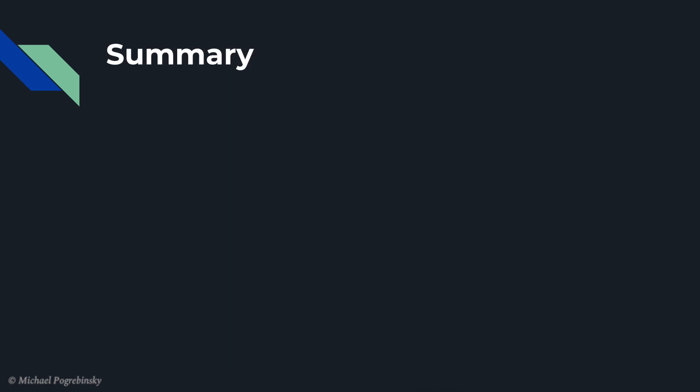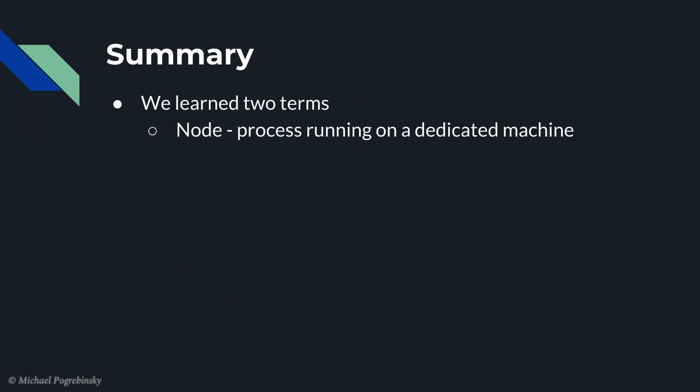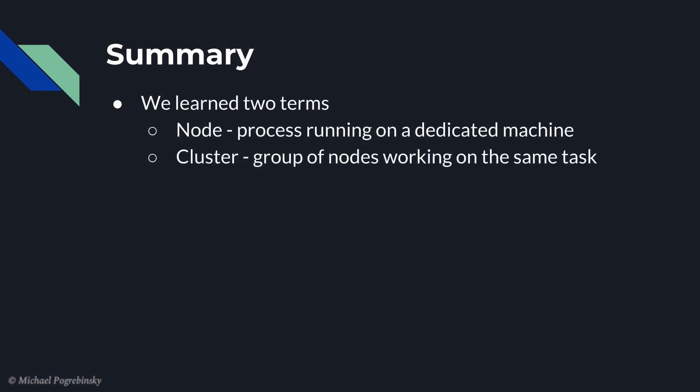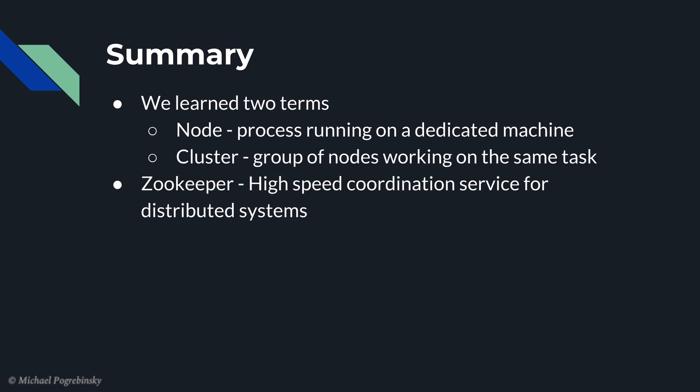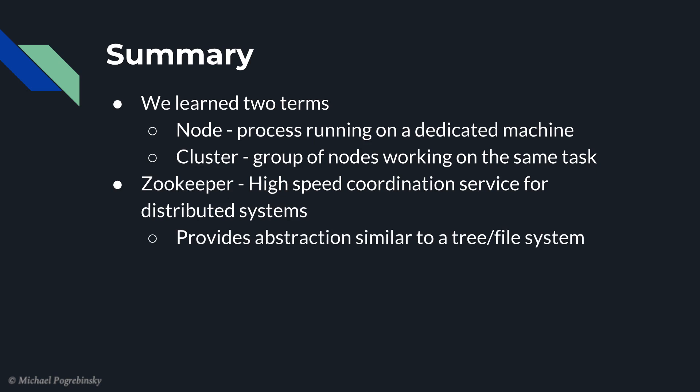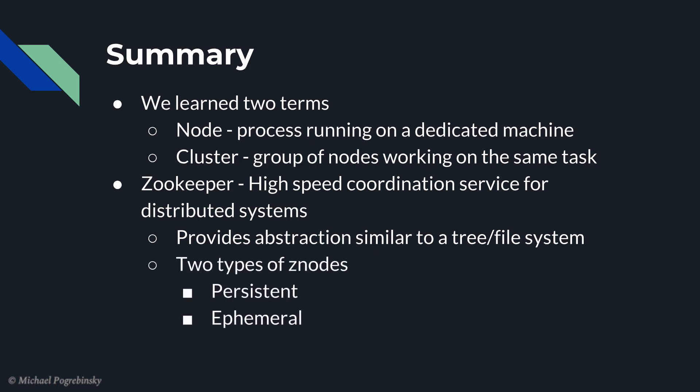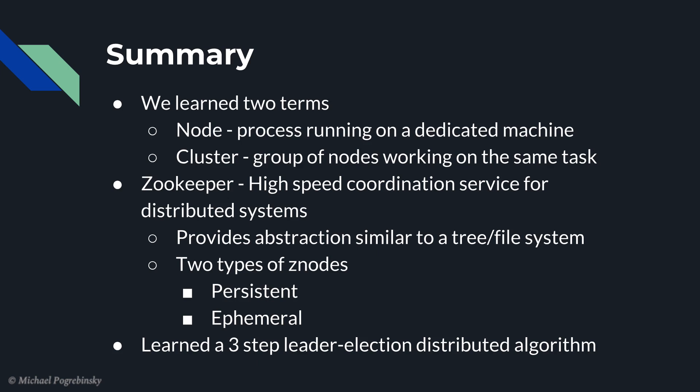We learned a lot in this lecture, so let's quickly summarize it. We learned two new terms: the node, which is a process running on a dedicated machine, and a cluster, which is a group of nodes working on the same task as a unit. We then talked about the challenges of coordinating between different nodes in a distributed system and learned the basics of Zookeeper, which is a coordination service for distributed systems. Primarily, Zookeeper provides us with a very simple abstraction similar to a tree or a file system. We talked about two types of z-nodes, the persistent and the ephemeral, and we finished with a three-step algorithm for leader election in a distributed system.